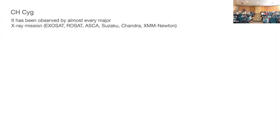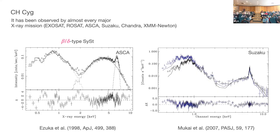We jump directly into CH Cygni. CH Cygni has been observed by almost every major X-ray mission. Its spectrum is a beta-delta type symbiotic star, so you can actually see two components. Although there are spectra from almost every mission, I selected two specific ones. We need a soft component, a hard component, and something extremely broad.